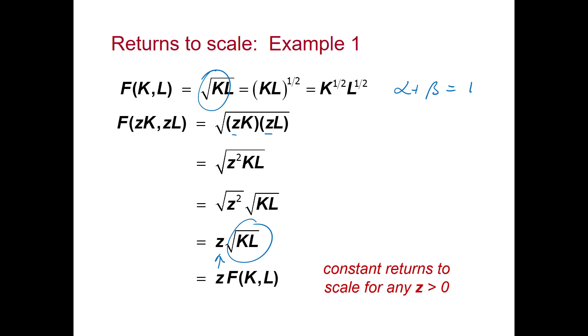So for any value of Z, this type of production function exhibits constant returns to scale. Where we have a production function of this form, where the exponents alpha and beta sum to 1, then we'll always have constant returns to scale.